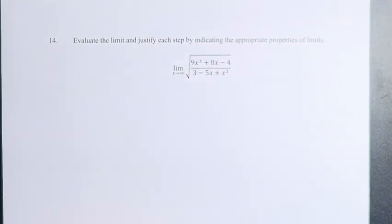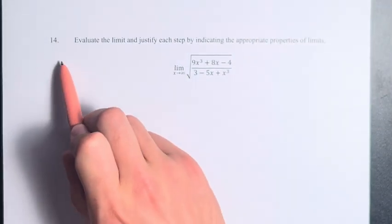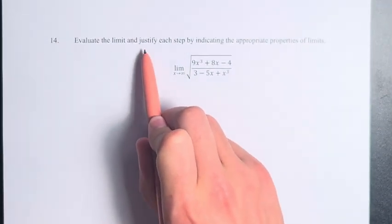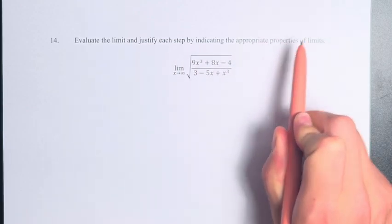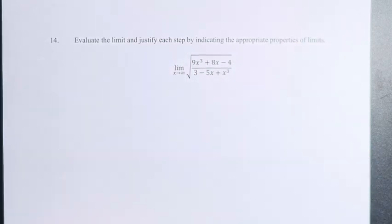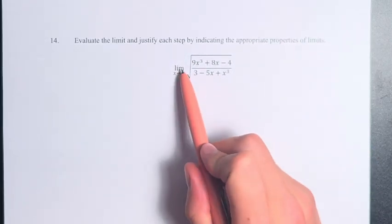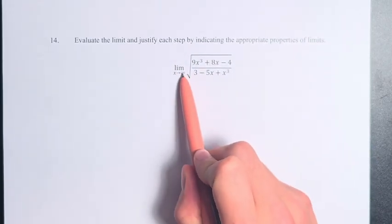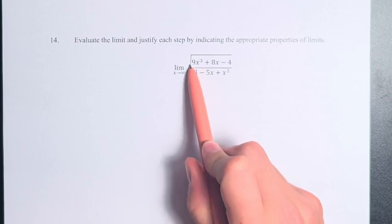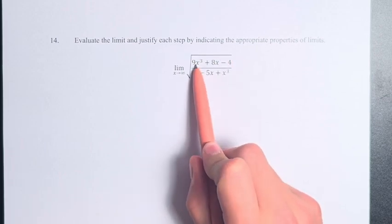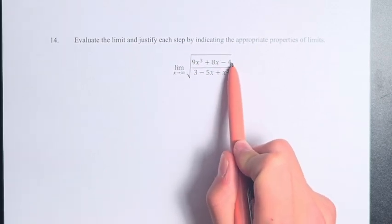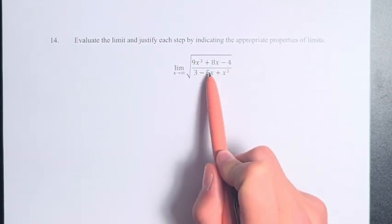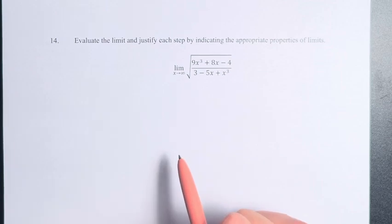Hello and welcome back to another video. In this problem, we're asked to evaluate the limit and justify each step by indicating the appropriate properties of limits. We have the limit as x approaches infinity of the square root of 9x cubed plus 8x minus 4, over 3 minus 5x plus x cubed.